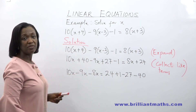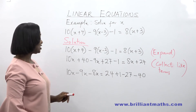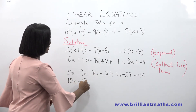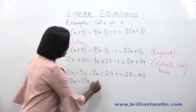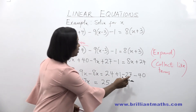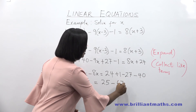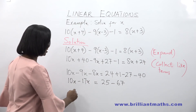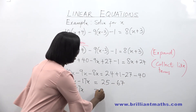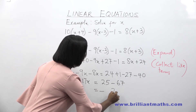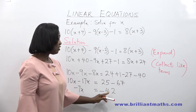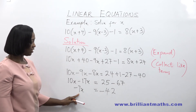Since minus 9x and minus 8x are both negative, we add them together and give a negative sign. So we have 10x minus 17x is equal to 24 plus 1, which is 25. Then grouping the two negatives: 27 plus 40 is 67. So 10x minus 17x gives minus 7x, equal to 25 minus 67, which gives us minus 42.